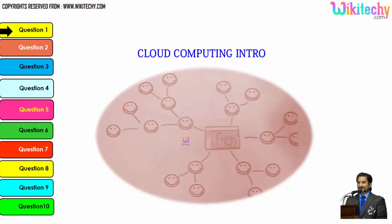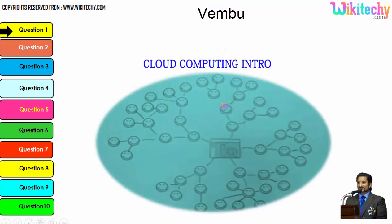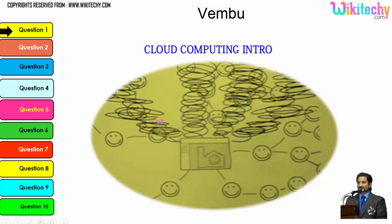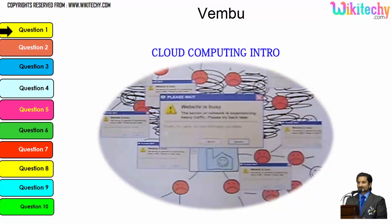Let's talk about the cloud computing intro. This is a computer connected to a server, and the server is monitoring this computer. Once the network becomes bigger, monitoring becomes tougher for that server. As more computers are added, the network grows and the monitoring system becomes really slow. There is a possibility that the network crashes or the server couldn't monitor specific networks.